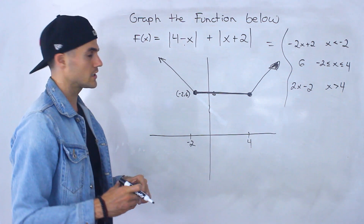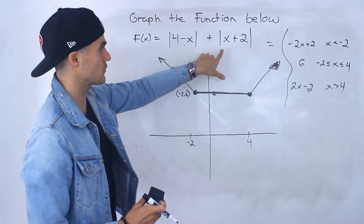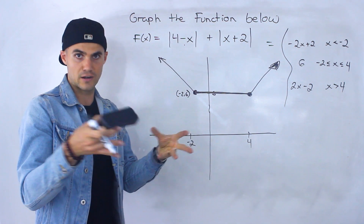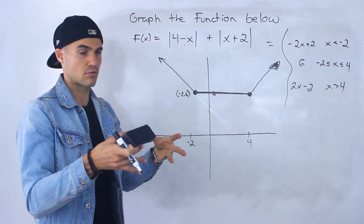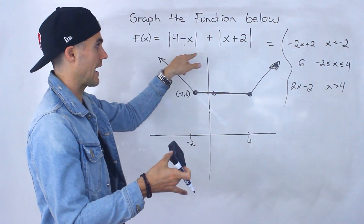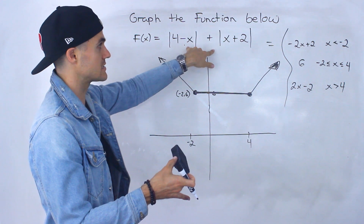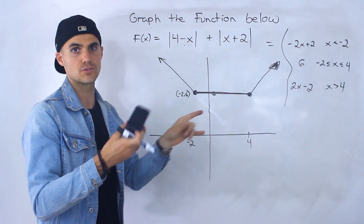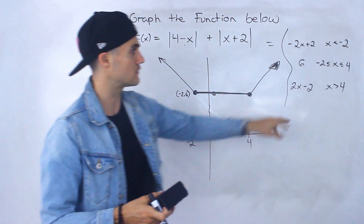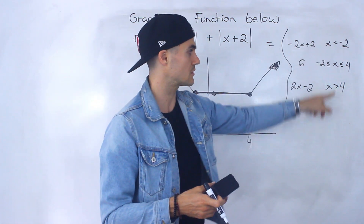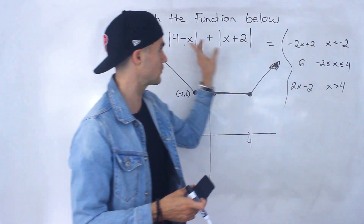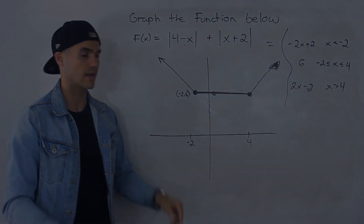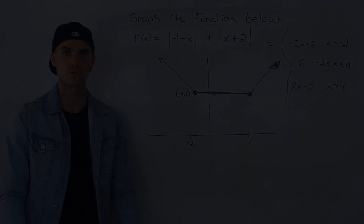Kind of tricky. We created piecewise functions for each absolute value expression separately, combined the intervals of both, added the two functions in each respective interval, made one overall piecewise function, and then graphed it to get this result.